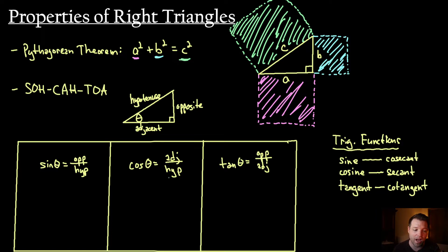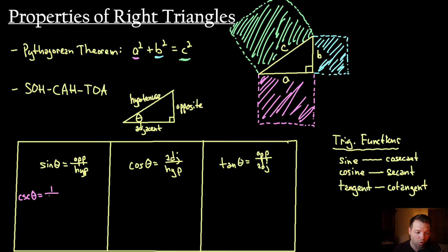Sine pairs with cosecant because they are inverses of each other. In fact, the cosecant — we usually write cosecant as CSC — so the cosecant of theta is actually equal to 1 over the sine of theta, because that's the inverse. With a little bit of algebraic manipulation, you could also write this as the sine of theta is equal to 1 over the cosecant of theta. That's equivalence — you can write it both ways.